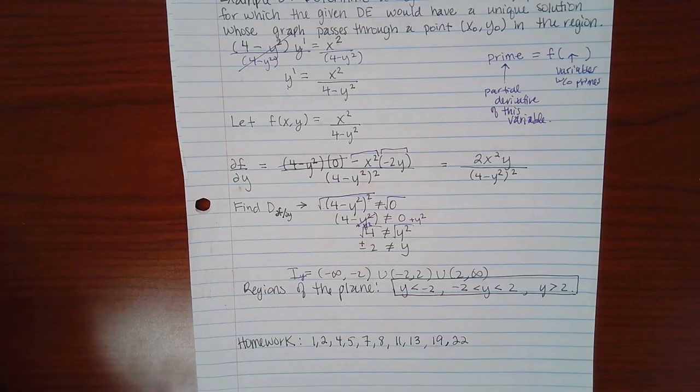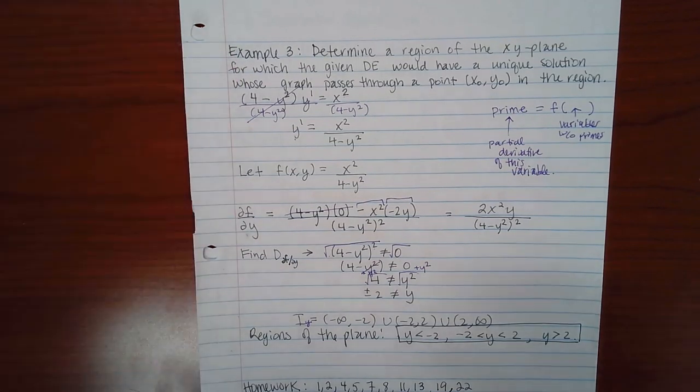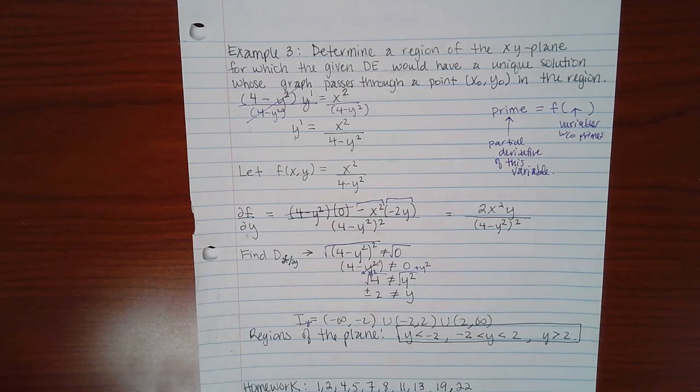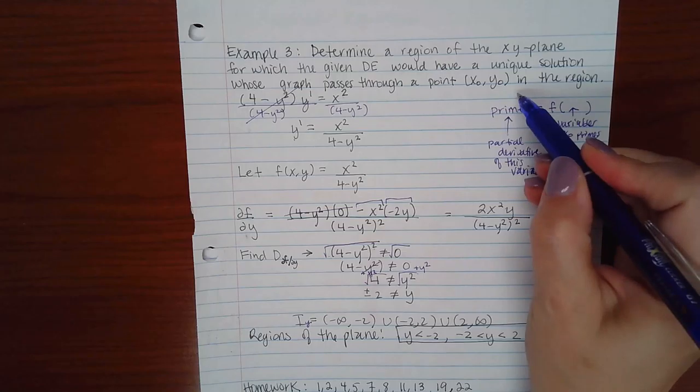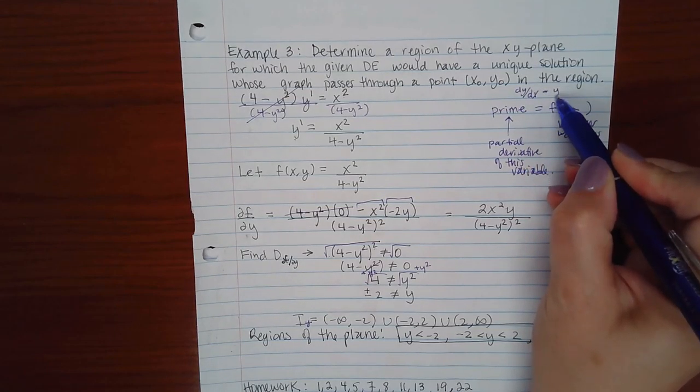Yes, 19 and 22 are within that same section with the same directions. So for both of those problems, you want to get the y prime by itself. Because whether I'm given y prime or DY DX, that is still y prime.